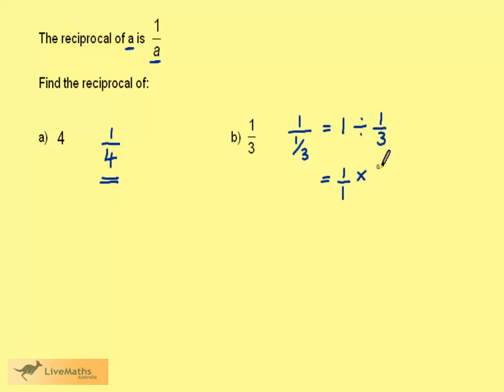If we're dividing, we can multiply and turn the second fraction upside down. We then get 1 times 3 is 3, and 1 times 1 is 1, giving us 3. So, 3 is the reciprocal of 1 third.